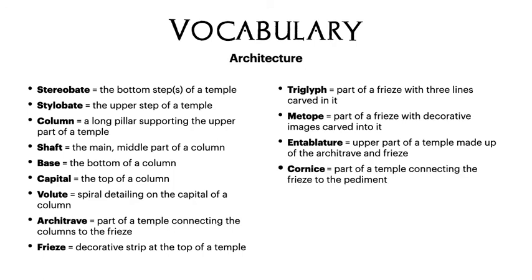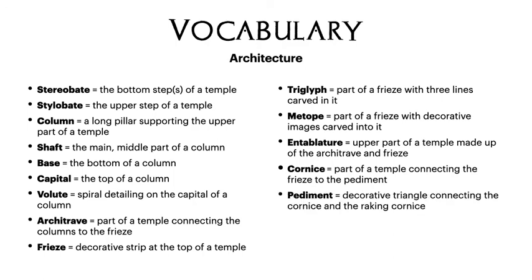Then on top of that we've got the cornice, which connects the frieze to the pediment. The pediment is that triangle on each end that holds up the roof, and it is also decorated in both Doric and Ionic temples. The uppermost part of the roof is the raking cornice. Make sure you've got all these terms and definitions written down in your notes. We've got some flashcards we can use in class to help us memorise them, so that you can use this terminology in your essays to make them a lot more detailed and specific for your exams.